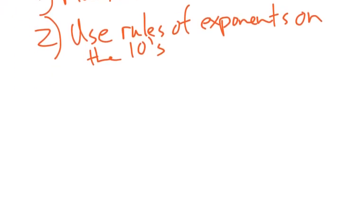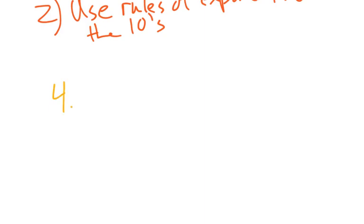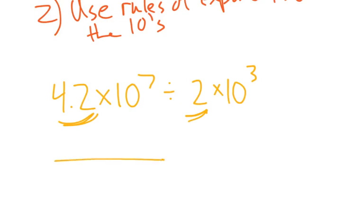So let me do one more example. Let's say we had 4.2 times 10 to the 7th divided by 2 times 10 to the 3rd. So what I'm going to do is divide my numbers out. So another way we can think about this is maybe writing it as a fraction. 4.2 times 10 to the 7th and then 2 times 10 to the 3rd. And when I think of it as like a fraction, I can see maybe a little bit better, these numbers can get divided and here there will be some rules of exponents.